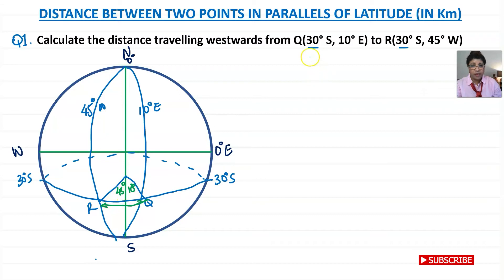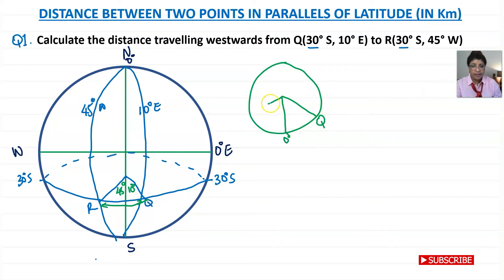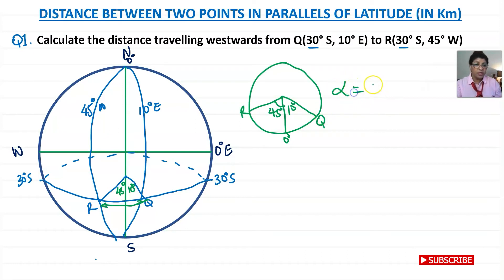We need to find the distance from Q to R. This is 10 degrees east and the other is 45 degrees west. Taking this small circle with its center, point Q is on one side with the prime meridian at zero degrees, and 45 degrees on the other side. So the total angle alpha — the one in the middle of the small circle — is alpha equals 45 degrees plus 10 degrees, which equals 55 degrees.